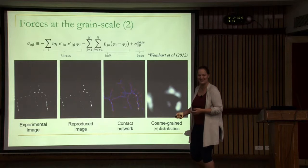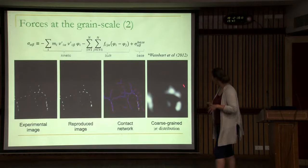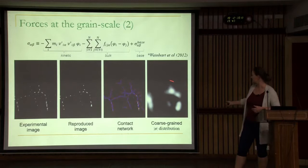This is our experimental image, and this is our reproduced image. Here we have the contact network, and this is actually the coarse-grained distribution using the coarse-graining procedure. This is something we can work further with.